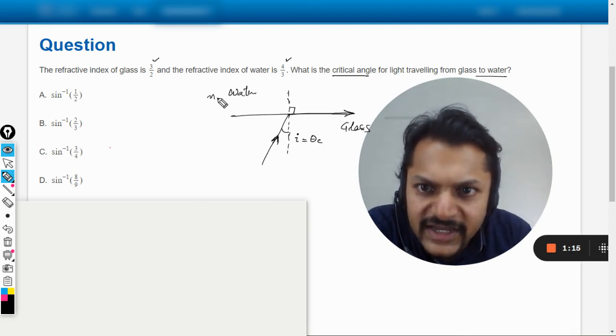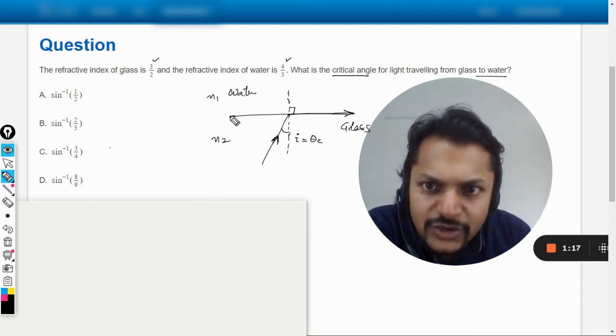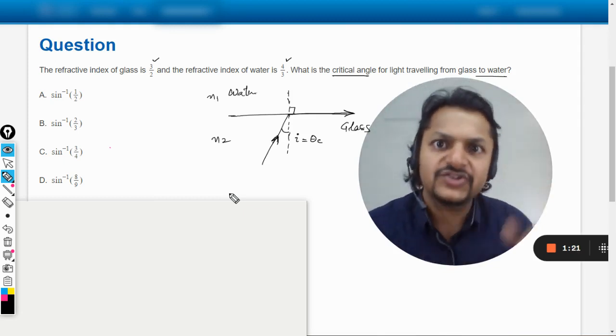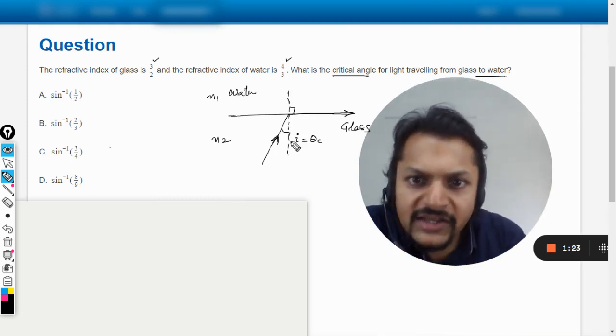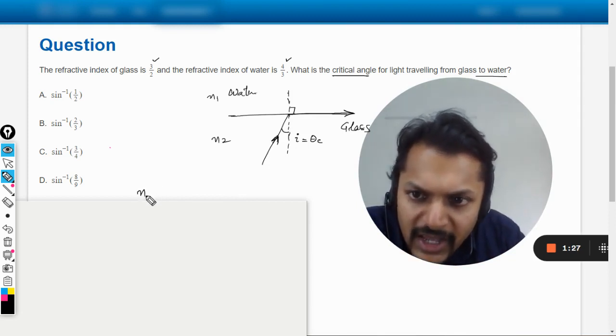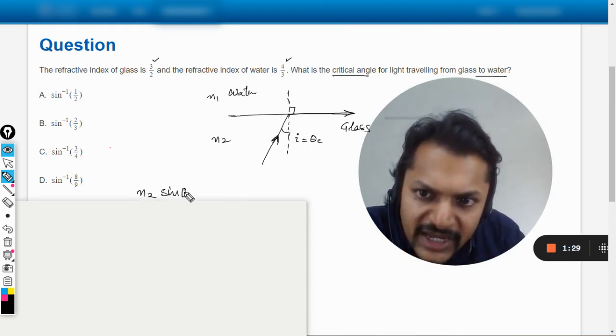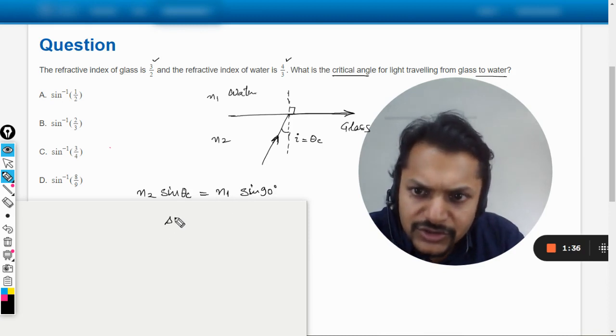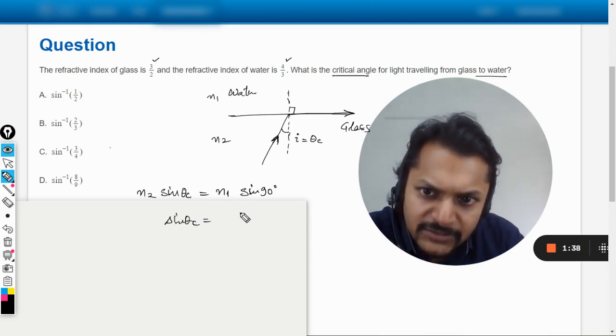Now this is taken as n1 and this is taken as n2. I have chosen n2 as the heavier refractive index, so accordingly we are going to apply Snell's law here. So it will be n2 sine theta critical is equal to n1 sine 90 degrees. So sine of theta critical becomes n1 divided by n2, and so theta critical is equal to sine inverse n1 divided by n2.